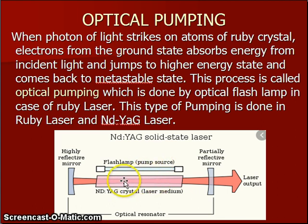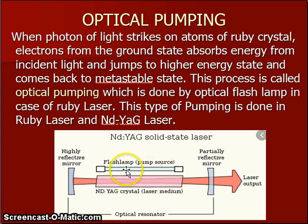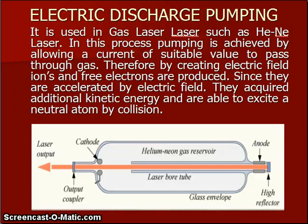When a photon of light strikes an atom of the crystal, electrons from the ground state absorb energy from the incident light and jump to a higher energy state, then come back to the metastable state. This process is called optical pumping, and it is carried out by an optical flash lamp in the case of ruby laser or Nd:YAG laser.